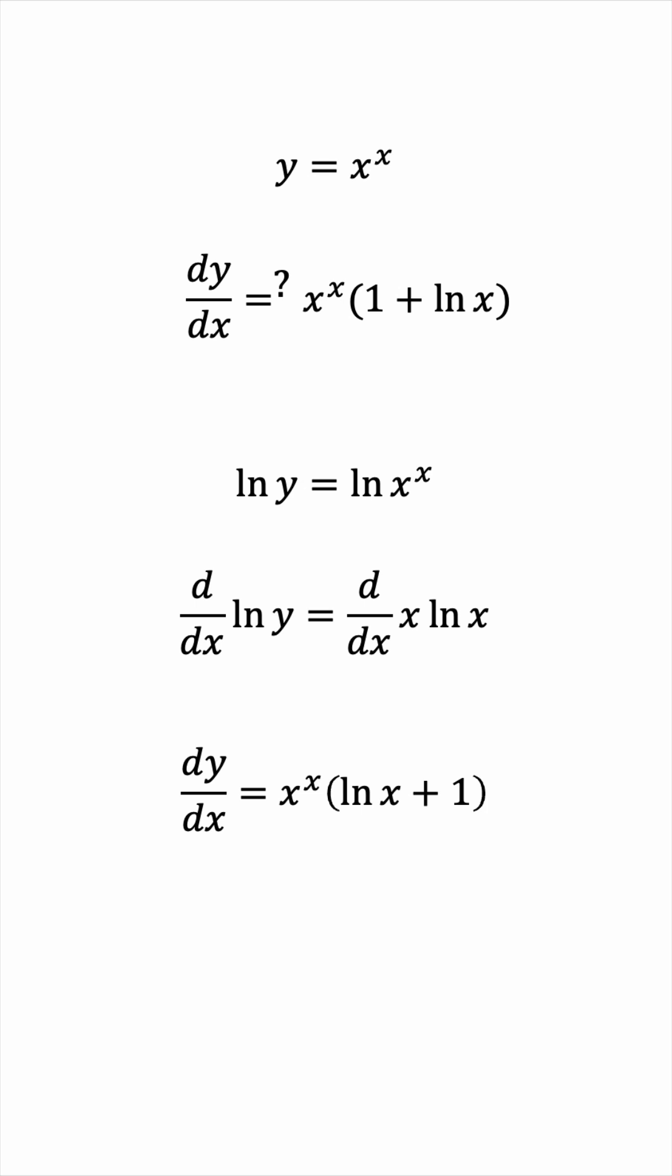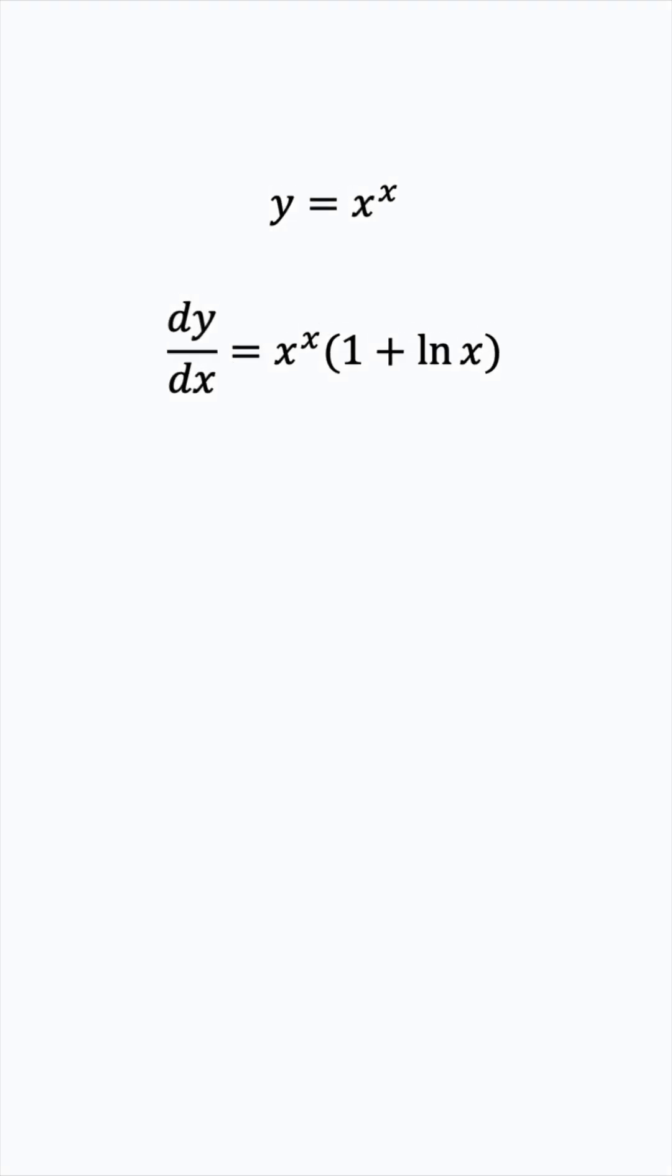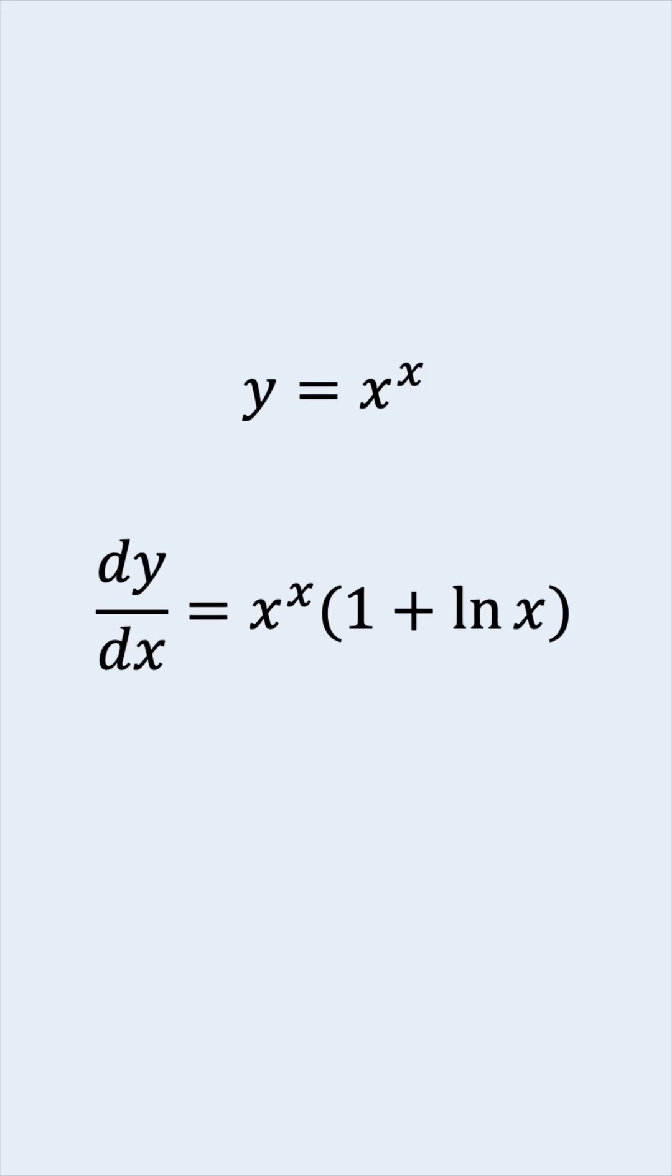But wait a minute, isn't this the proposed form we suggested at the beginning? It's exactly the same thing. So it was just a wild, educated guess of some sort, but it turned out to be true. The derivative of x to the x is indeed x to the x times 1 plus the natural log of x. Isn't that amazing?